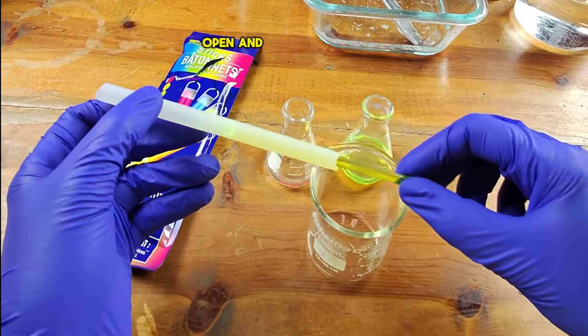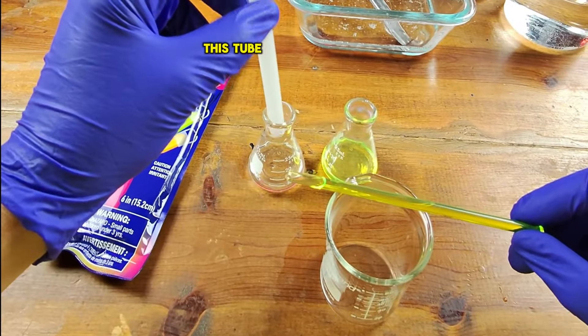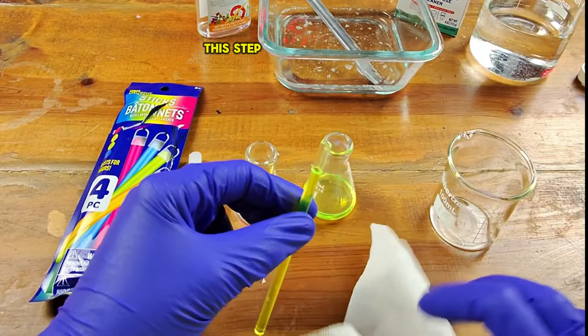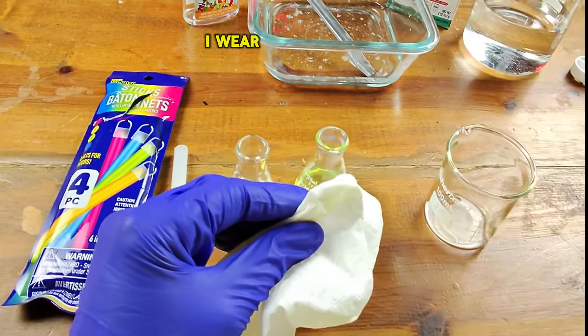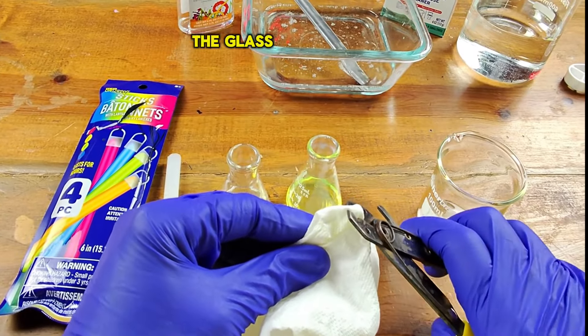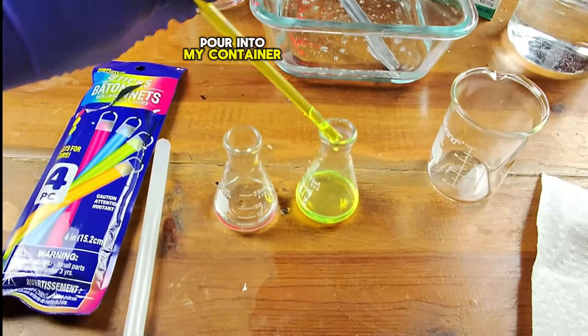I broke the sticks open and I separated the liquids. There's a liquid inside this tube and I put that into this container. Be very careful with this step. I take a paper towel, wrap it over the top of the glass. I wear safety glasses and then carefully break the glass tip, pour it into my container.